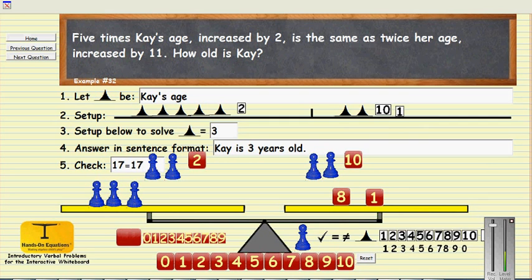So this then is an example of how you the teacher can display all of the problems in the hands-on equations verbal problems introductory workbook using this interactive application. In step two we do the setup and then legal moves can be performed with the larger pawns and cubes. So I trust that this is an application that you will find helpful.